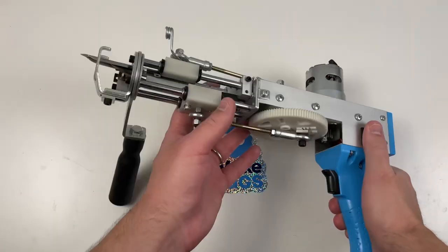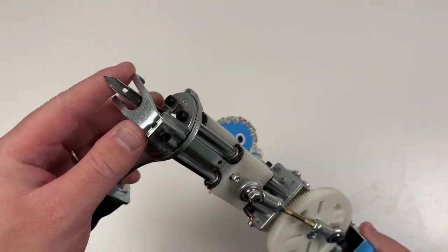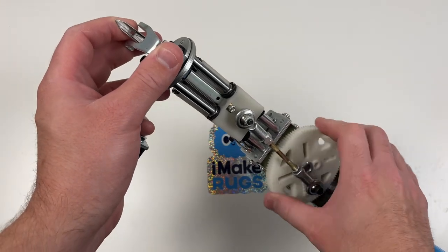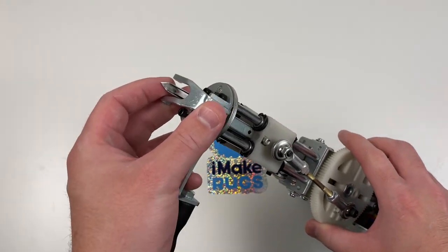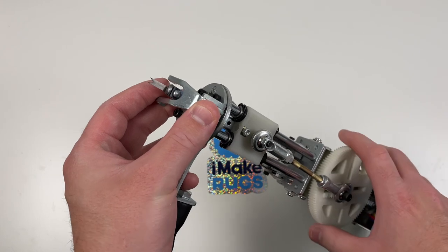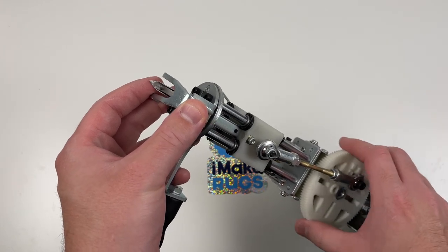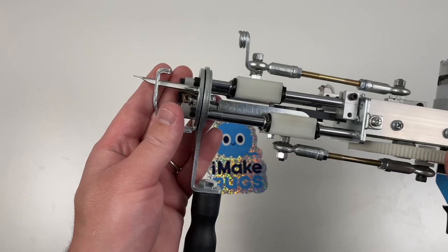So right now in my rug gun I have the loop pile scissor installed. I'll show you what it looks like when it's extended. It pushes the yarn out and just creates a loop. It's kind of like a sewing machine.